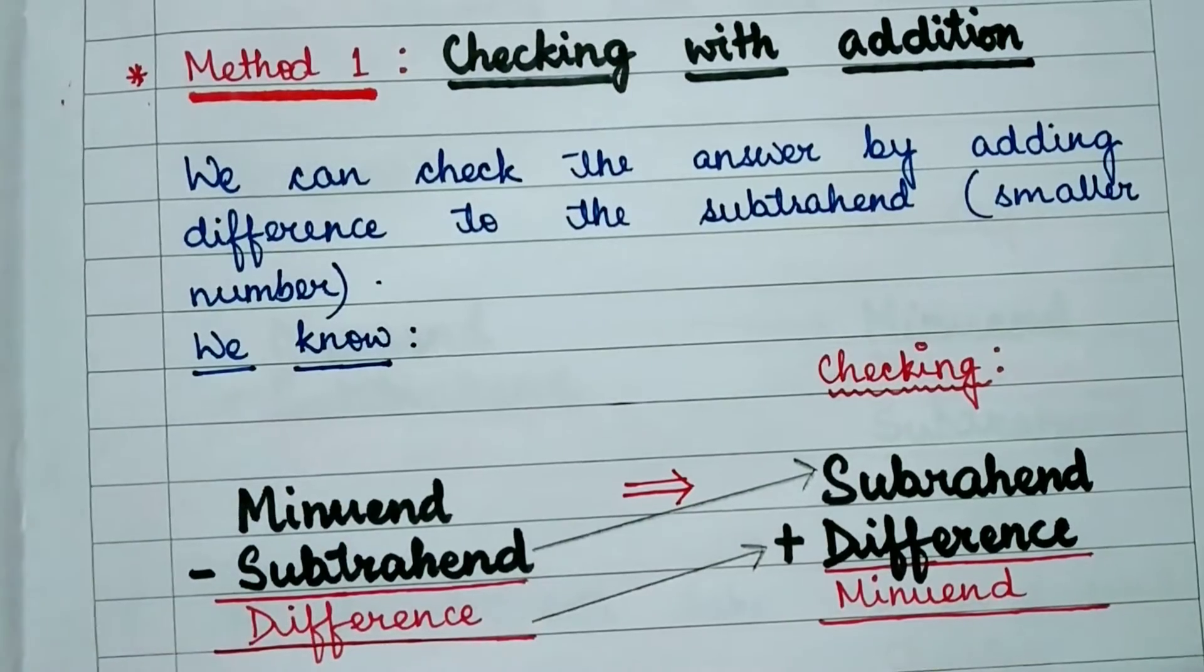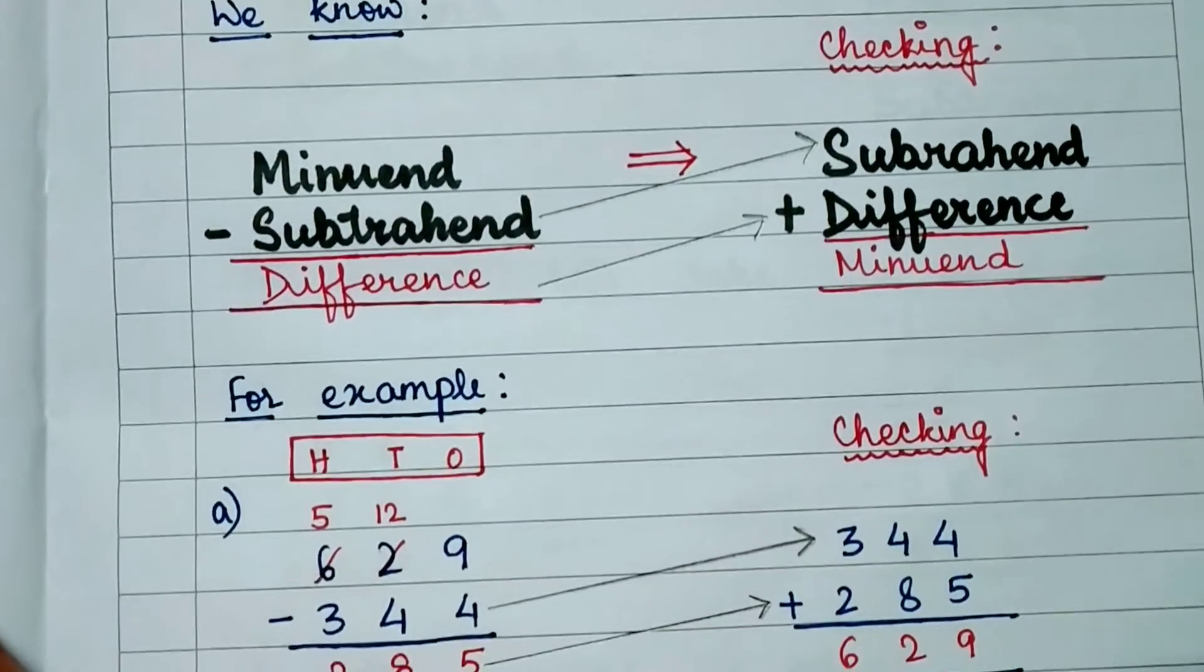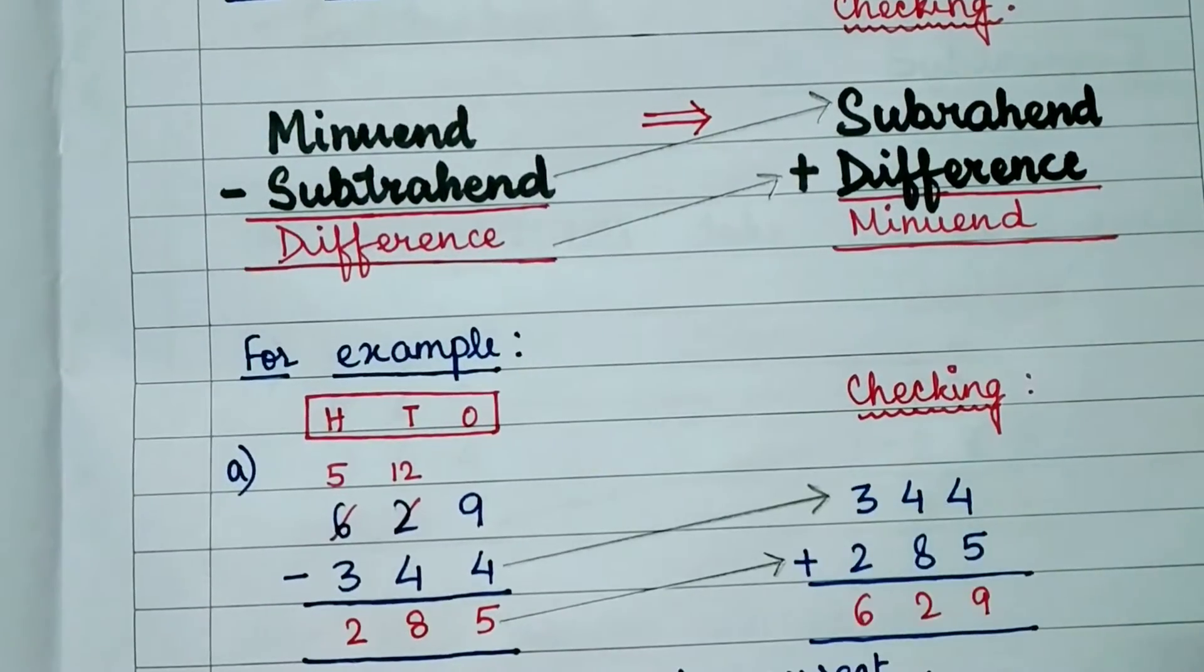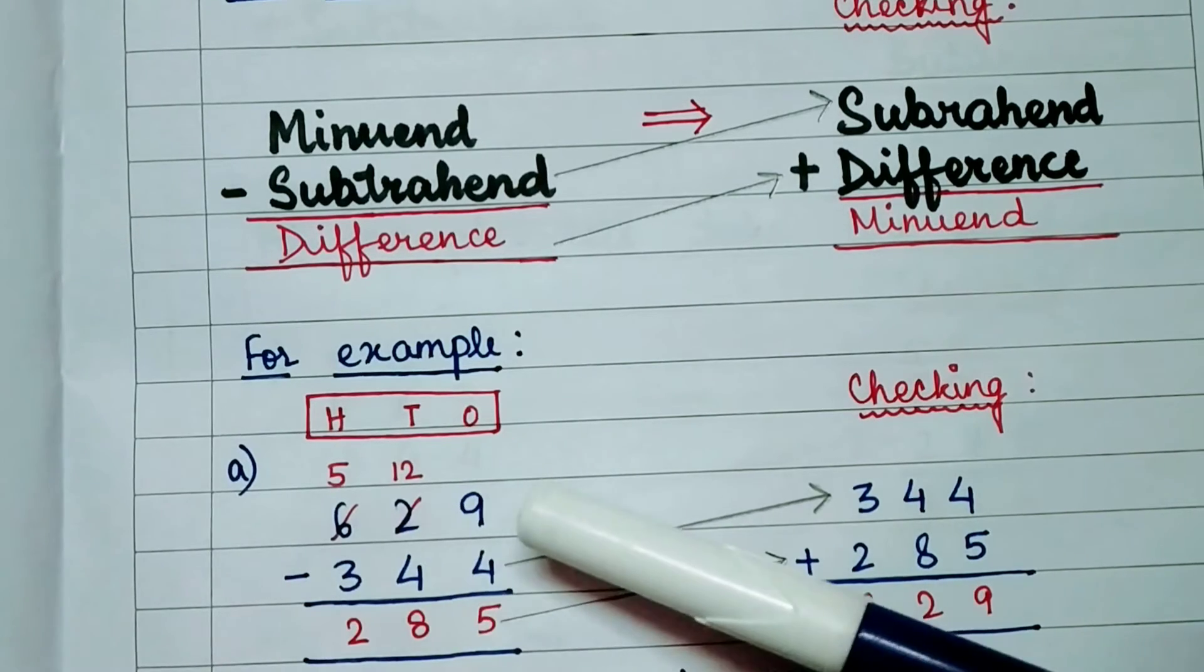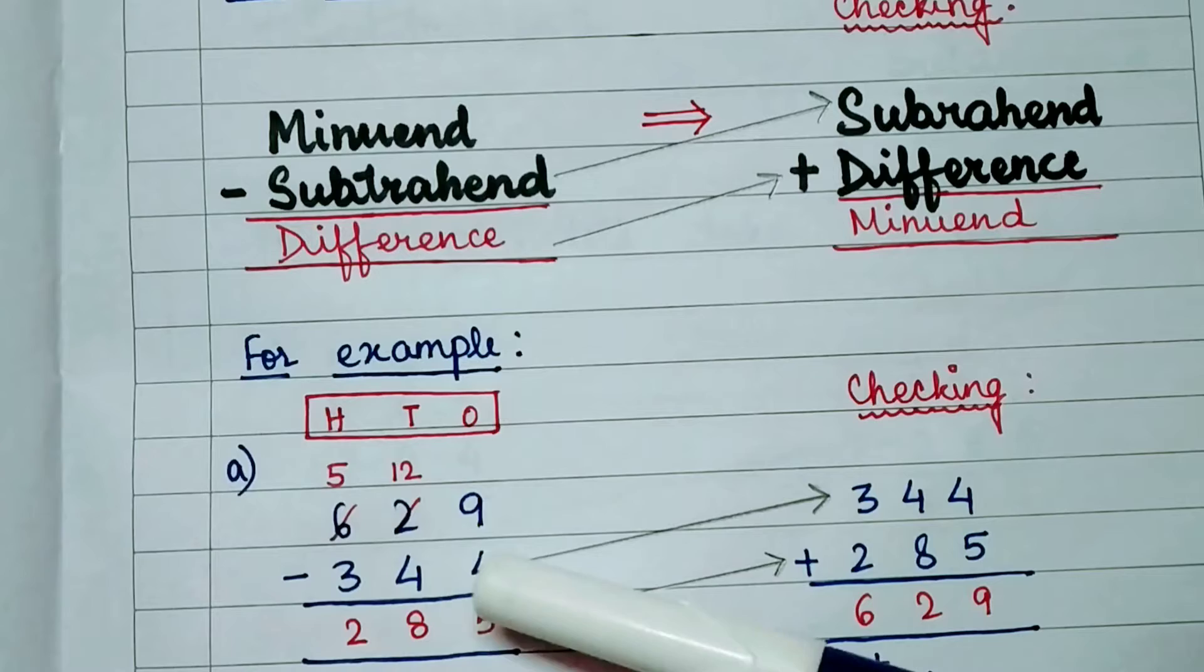Let us understand this with an example. Let's have a look children. Here this is an example. Here the minuend is 629 and the subtrahend is 344.